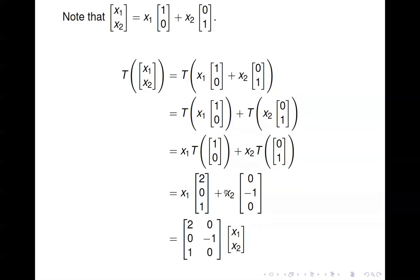This is just a linear combination of those two vectors, which we can rewrite as a matrix with those columns times the components (x1, x2). So we've written T(x) as A times x. Now we have the matrix with which to apply the transformation. That matrix is simply the vectors you get when you apply T to (1,0) and (0,1).